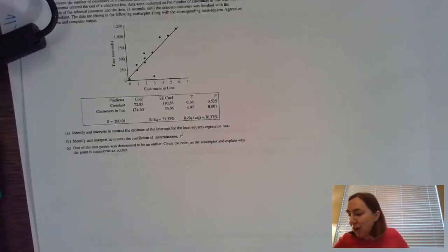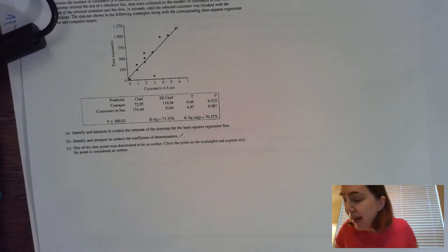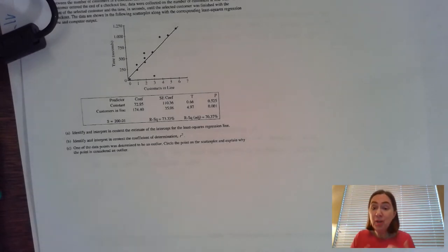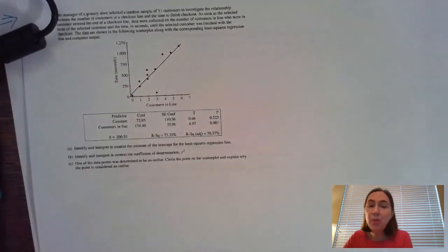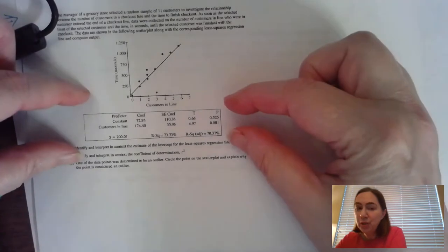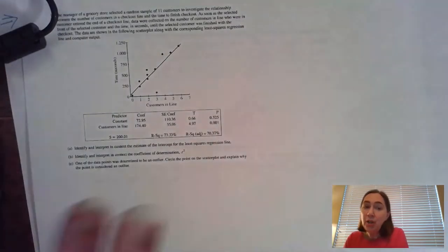Hi, we're going to be taking a look at the FRQ about grocery store wait times and checkout times, and it's all based on the number of customers in line. The first thing that you see right here is a scatterplot. As soon as you see the scatterplot and especially as soon as you see the computer output, you know you're working with linear regression.